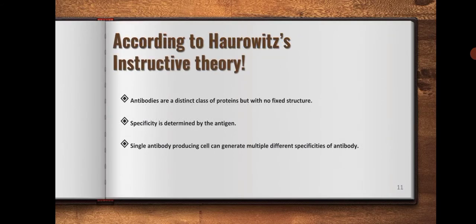This theory states that antibodies are a distinct class of proteins but with no fixed structures. Specificity is determined by the antigen. A single antibody producing cell can generate multiple different specificities of antibodies.